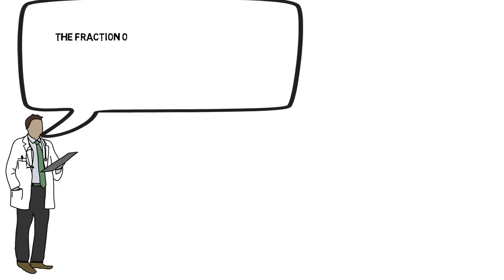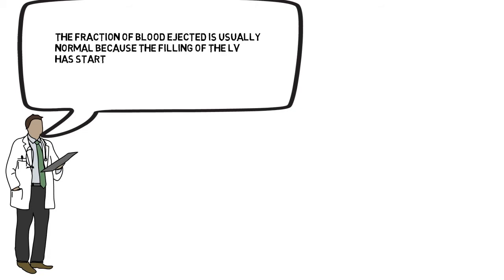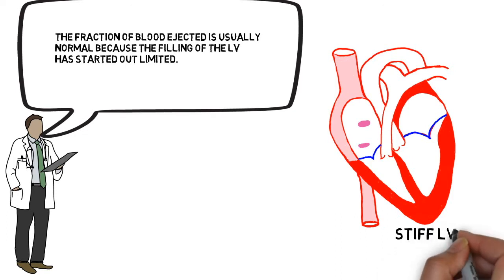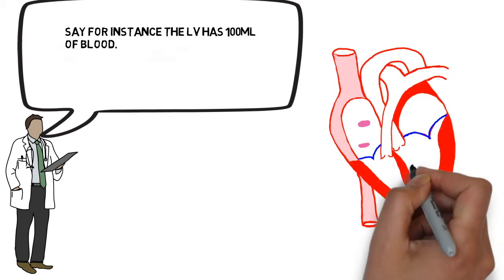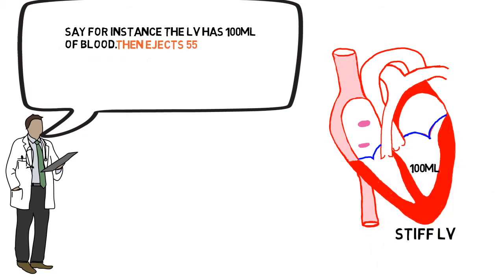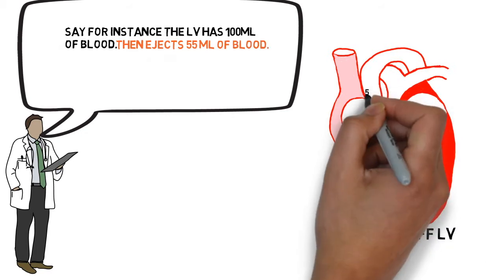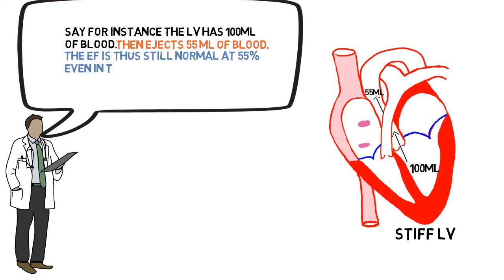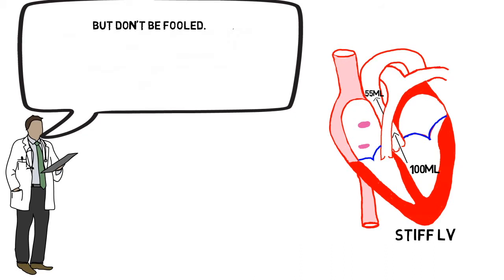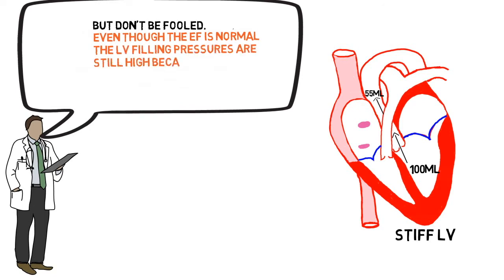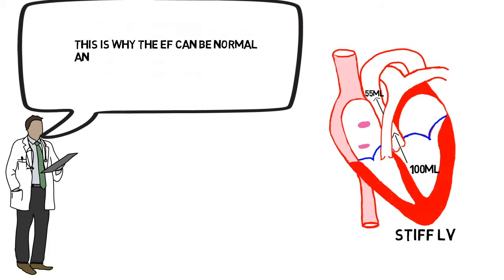With diastolic heart failure, the ejection fraction is normal because the filling of the left ventricle starts out limited. For example, if the stiff left ventricle has 100 mL of blood and ejects 55 mL, the ejection fraction is still normal at 55% (55 ÷ 100 = 55%). Don't be fooled — even though the ejection fraction is normal, left ventricular filling pressures are still high because the LV does not relax properly.